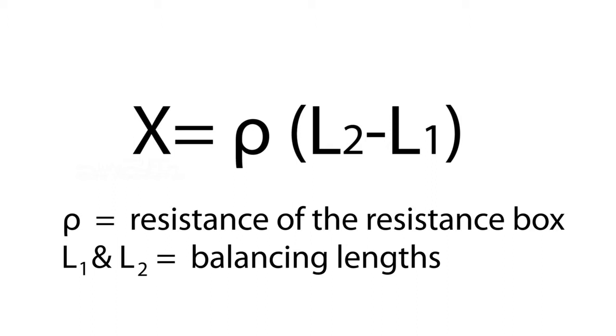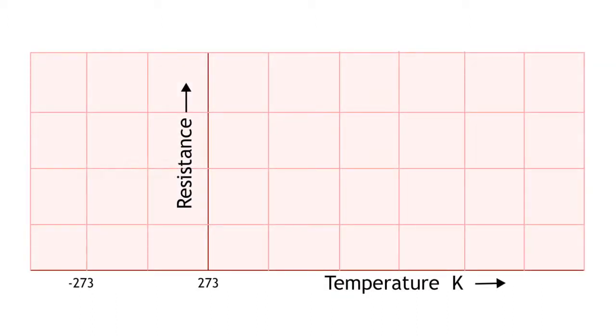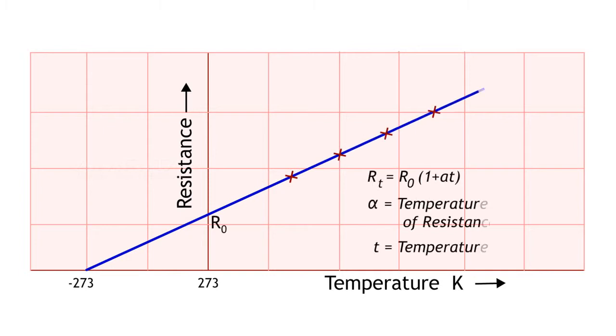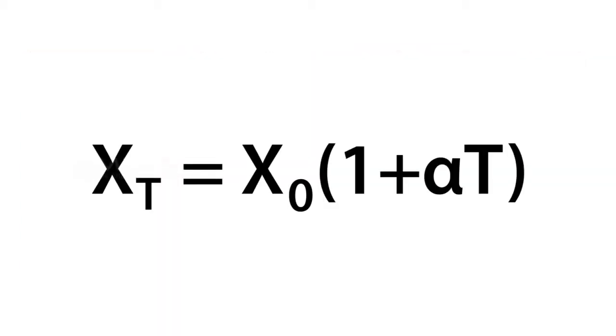A graph is plotted with the temperature along X-axis and resistance along Y-axis. Then the graph is extrapolated to cut the X-axis at absolute zero, that is minus 273 degrees Celsius. From the graph we can find out the temperature coefficient of resistance alpha using the relation Xt = X0(1 + αt).